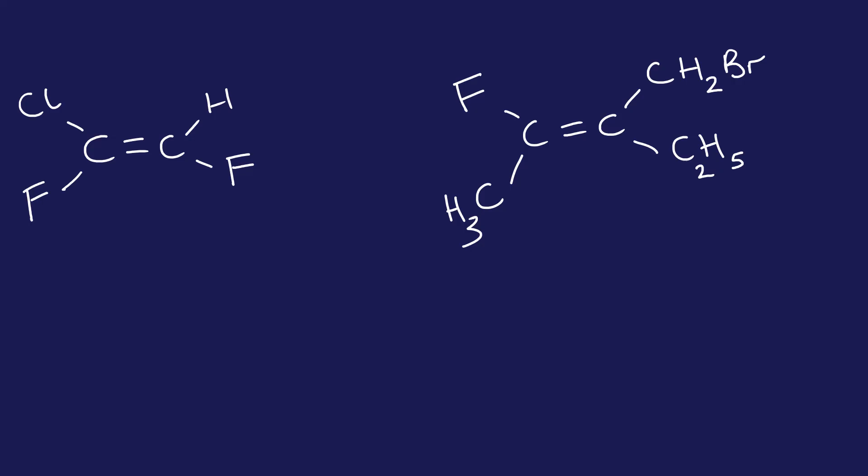I'm going to suggest you pause the video now and then try to do these two yourself. Identify them as E or Z isomers, applying our CIP rules. When you're ready, unpause the video and see if you got them right.